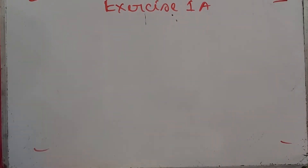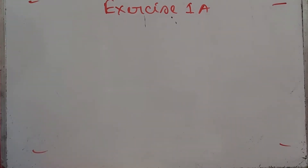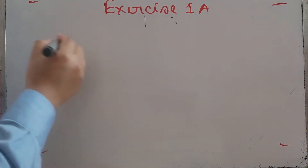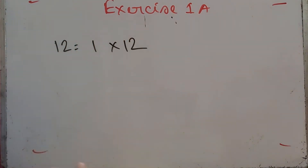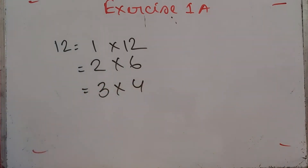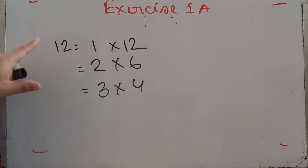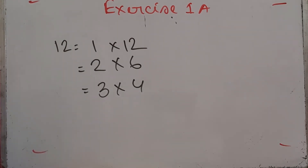Assalamu alaikum, dear students. Today we will solve Chapter One, which is all about factors and multiples. Suppose we write the number 12. We can divide 12 by 1 and get 12, divide by 2 and get 6, divide by 3 and get 4. So 1, 2, 3, 4, 6, and 12 are all factors of 12. And 12 is the multiple of each of those numbers.